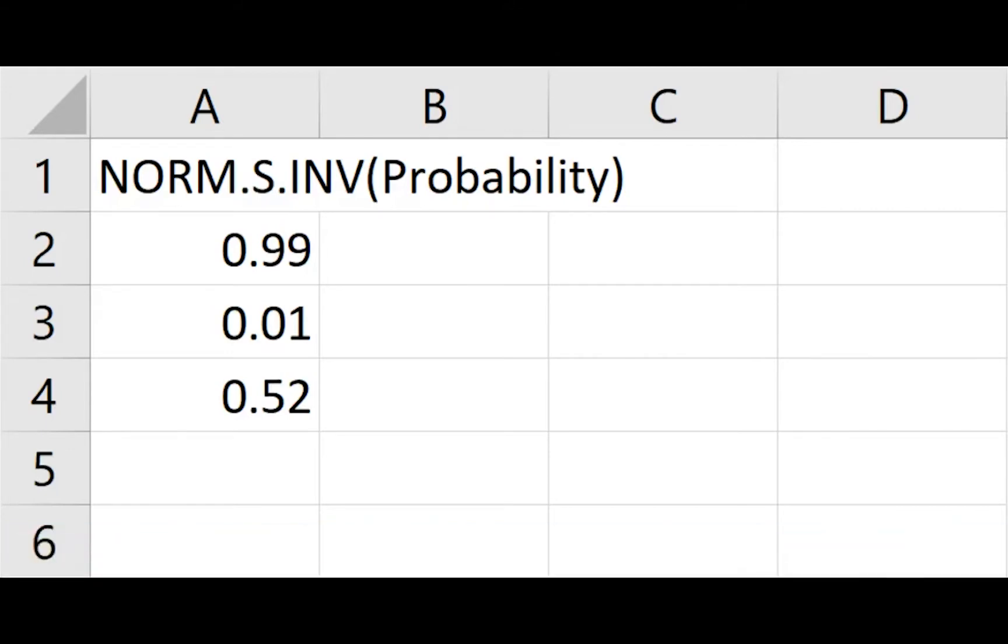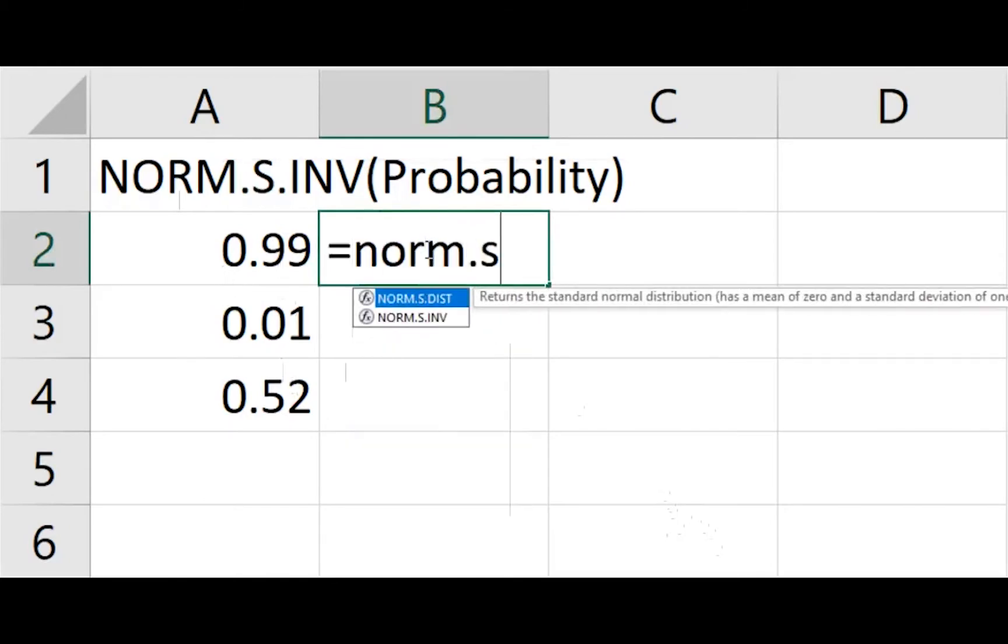Here we have some probabilities, or percentages, and we're going to look up the z values. So all I need to do is put in the norm.s.inv, put in my percentage, in this case 0.99, close the parentheses, hit enter, and there's my z value, 2.326.